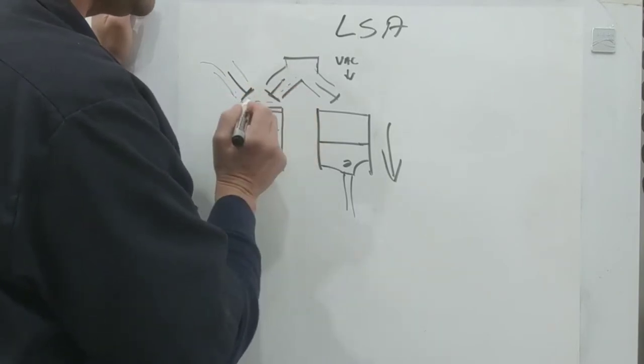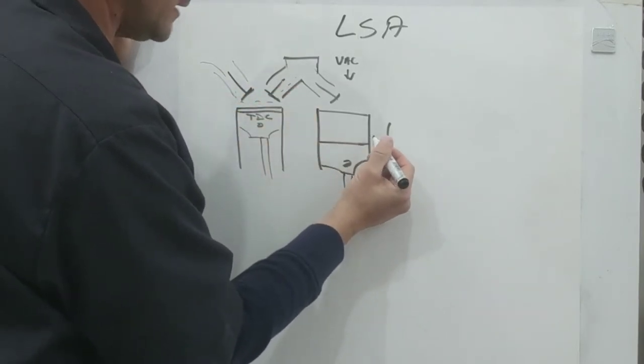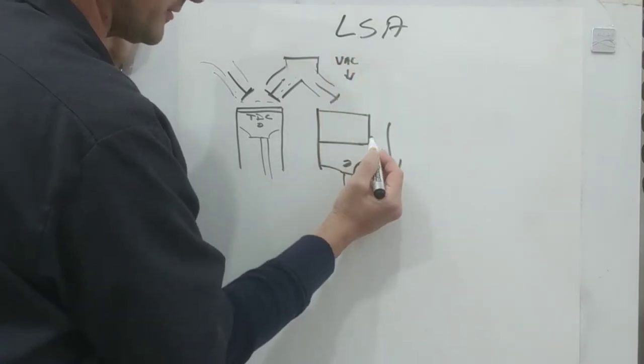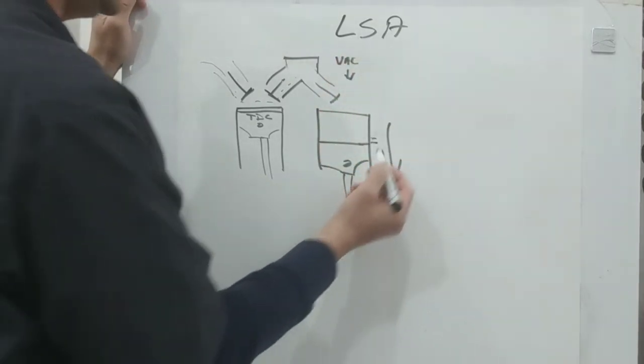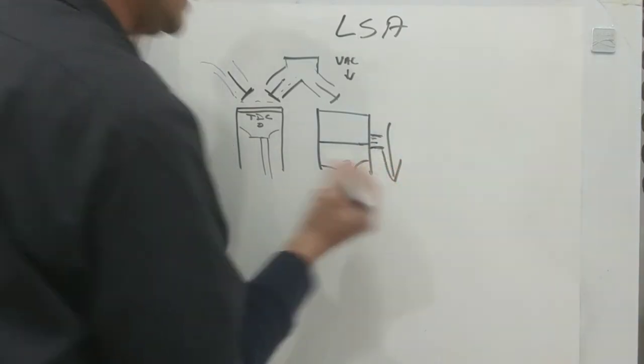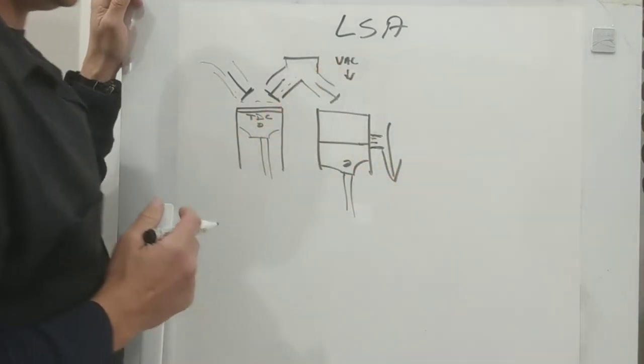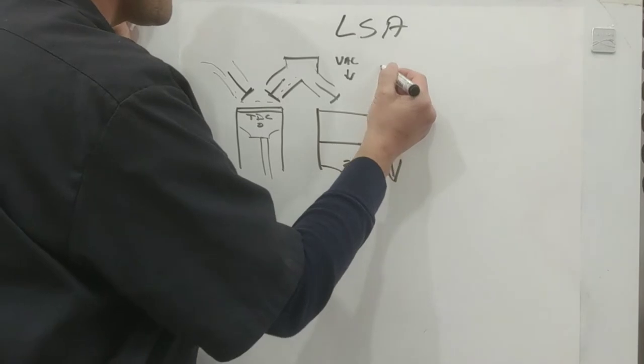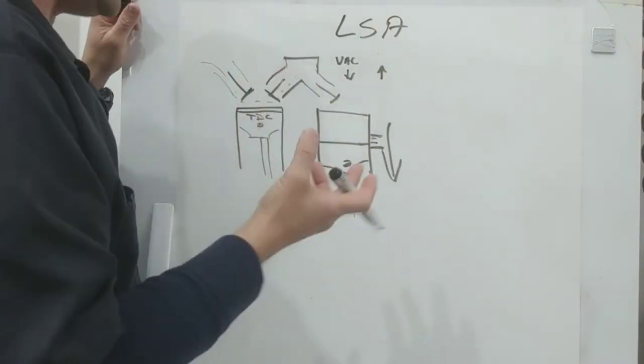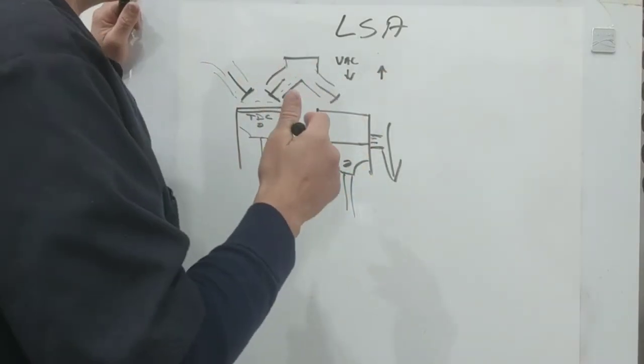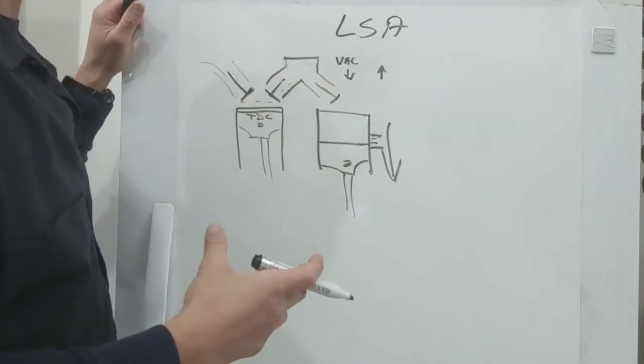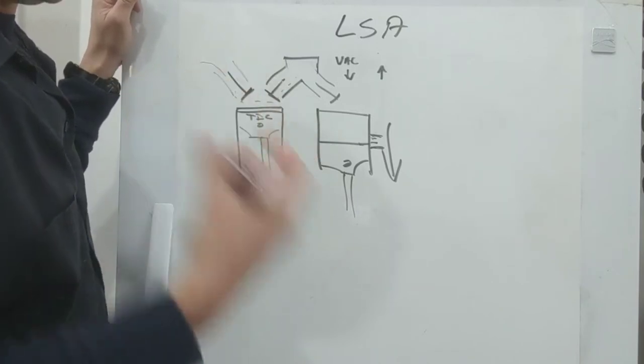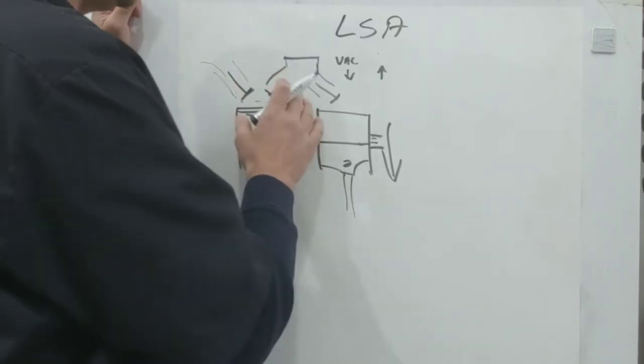So what does that do? Well, what happens is when that LSA gets tighter and that triangle gets wider where the valves hang open, it's going to have a stronger signal here. And again, you still have a piston going down in the bore at its maximum speed. What will happen is now this is hanging open longer, so now instead of the overlap triangle happening here and here, it's happening here and here. And what does that do to vacuum? A weaker vacuum signal.